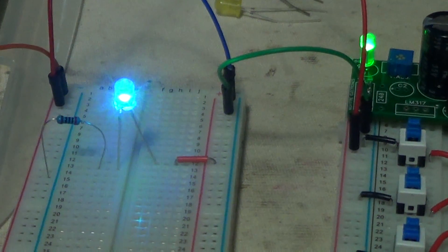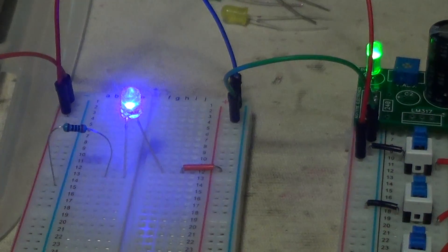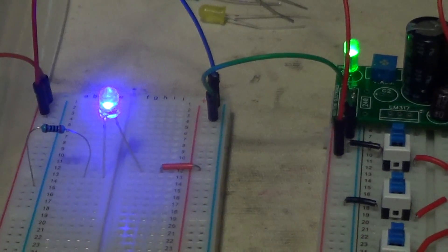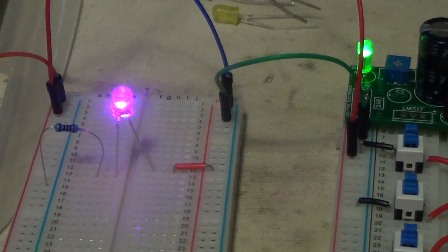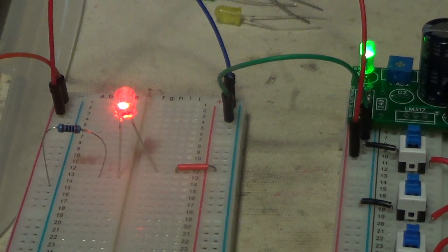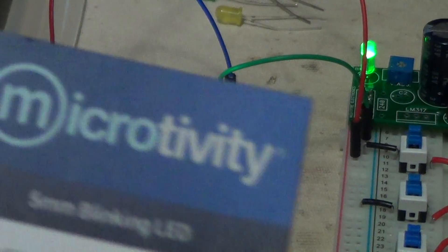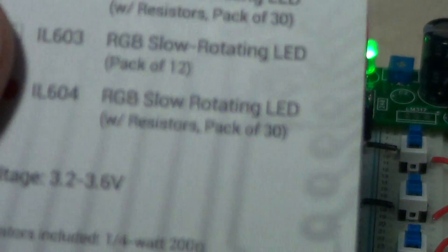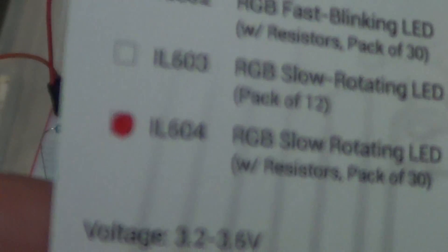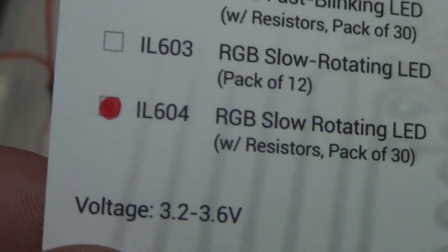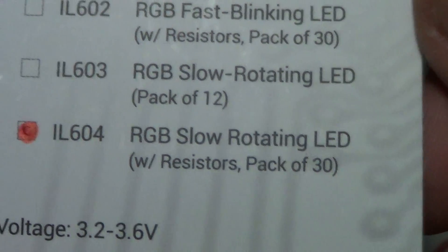I just found these, so they're pretty cool. It's called a five millimeter blinking LED, slow rotating, and I got them from Microtivity. You can see it's their IL-604 RGB slow rotating LED.